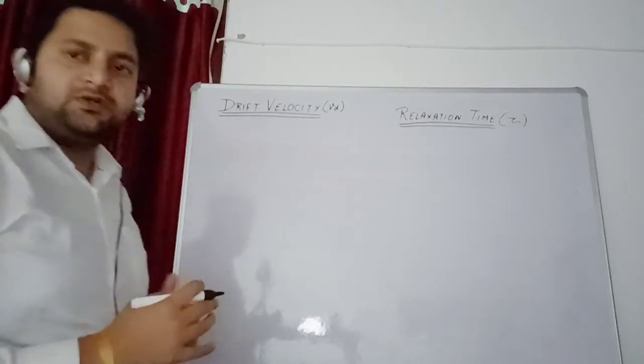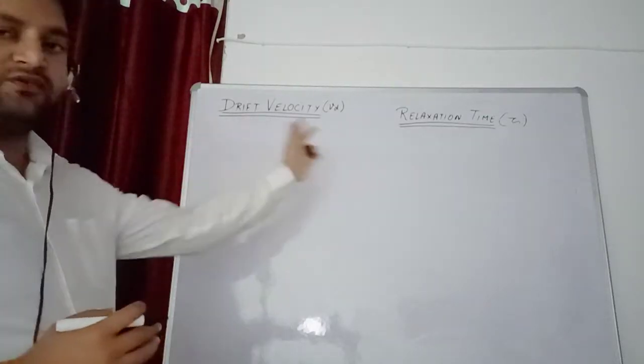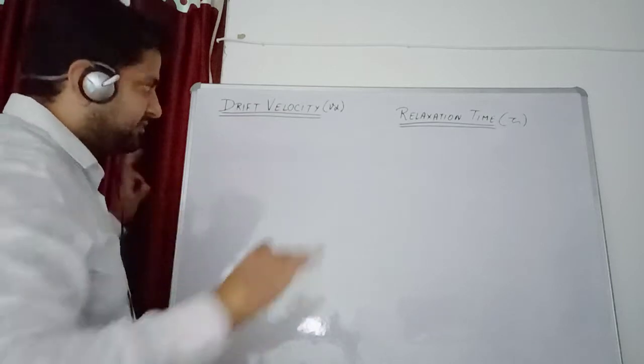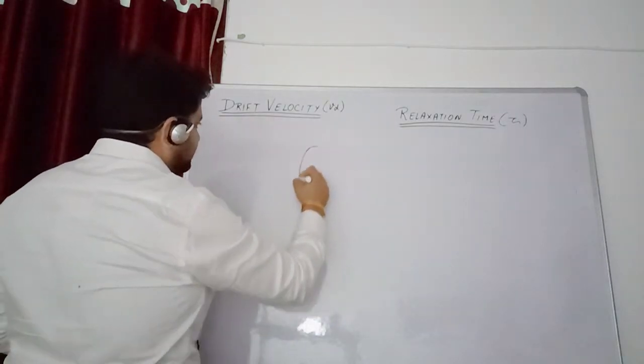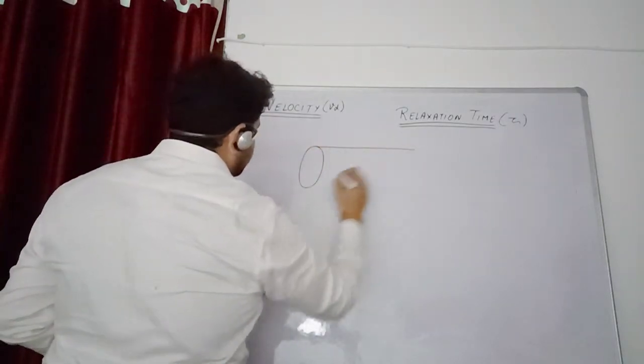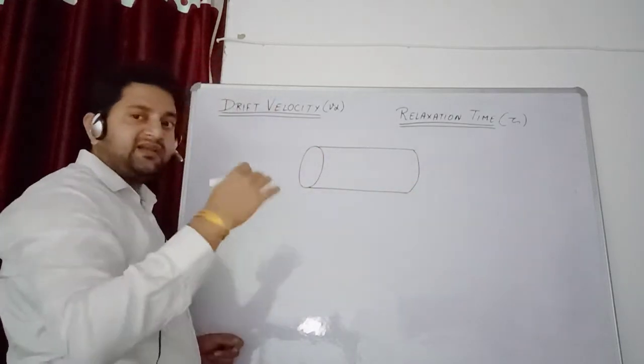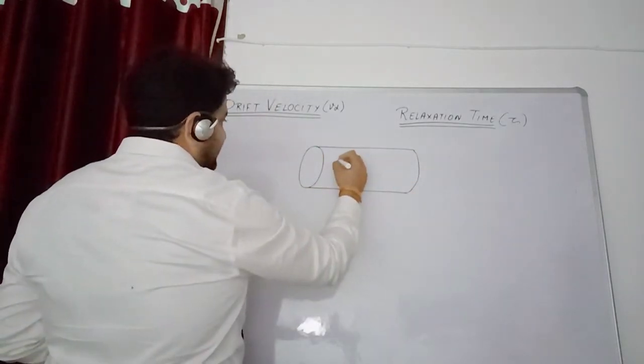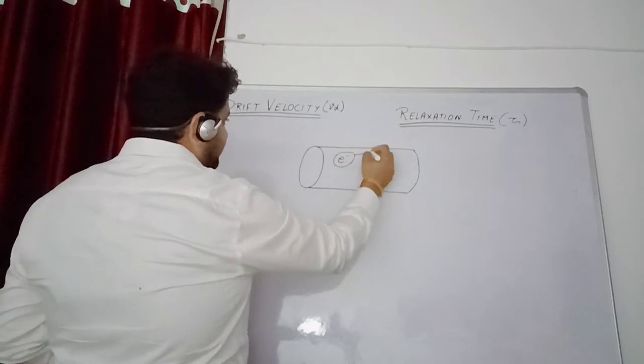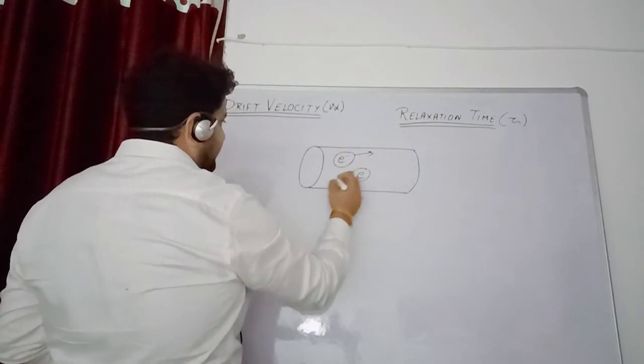Hello everyone, today we will discuss drift velocity and relaxation time. Let us suppose there is a metallic conductor. Now we can clearly see that in this metallic conductor, there are many electrons which will revolve randomly in any direction.